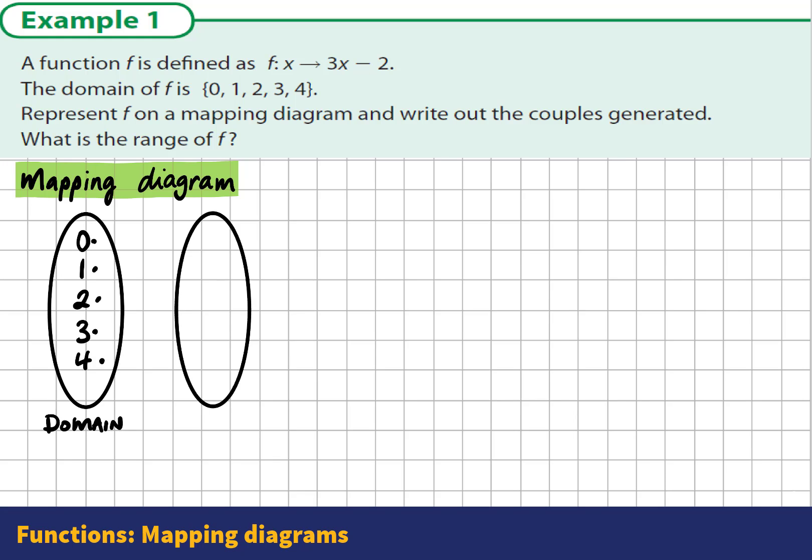The second oval, which will contain within it the range or output values, is called the codomain. So what are the actual numbers that appear in this codomain? What is the range of this function?